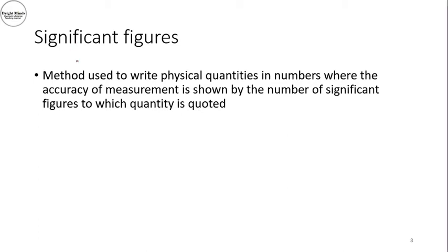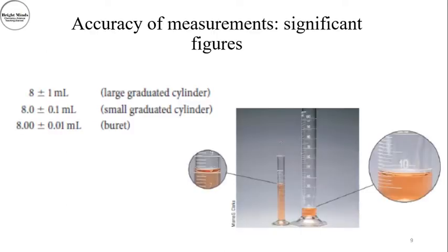Significant figures are a method used to write physical quantities where the accuracy of the measurement is shown by the number of significant figures. For example, if I have two graduated cylinders — one of 100 ml and one of 10 ml — and I place around 8 ml in both, the readings will differ in accuracy.